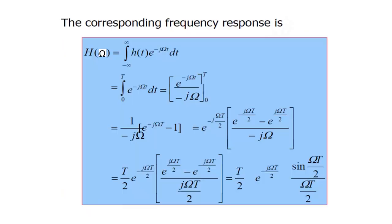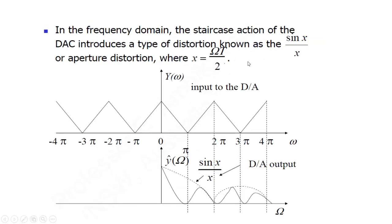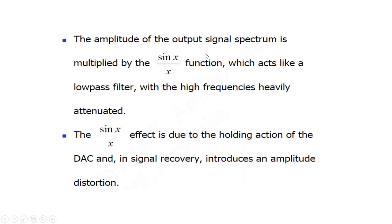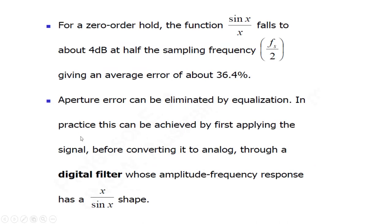This distortion introduces an error. The amplitude of the output signal spectrum is multiplied by the sinc x function, which acts like a low pass filter with high frequencies heavily attenuated. The sinc x by x effect is due to the holding action in the D2A converter, which gives the DAC output its staircase voltage shape. While doing the recovery, this introduces an amplitude distortion.